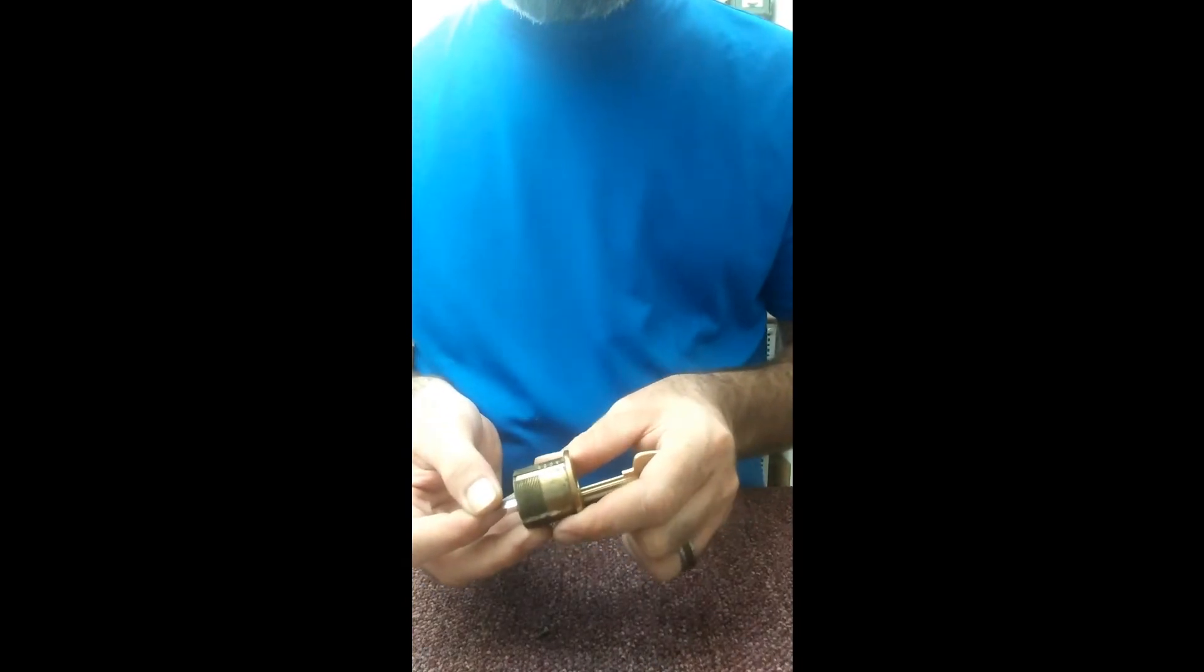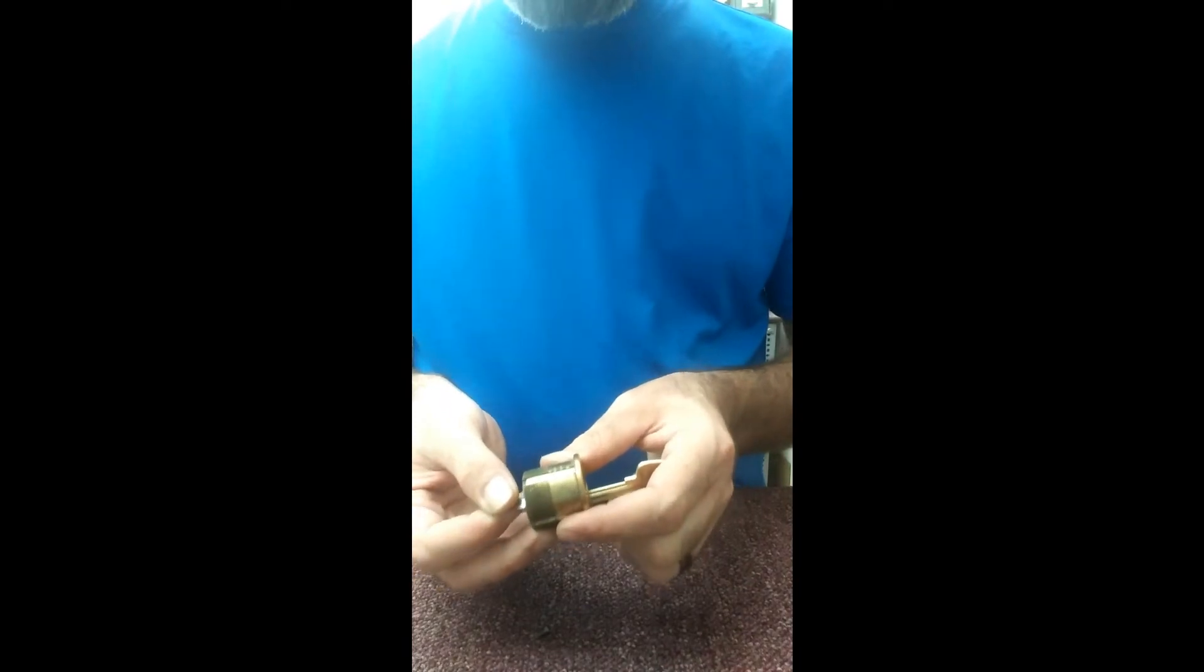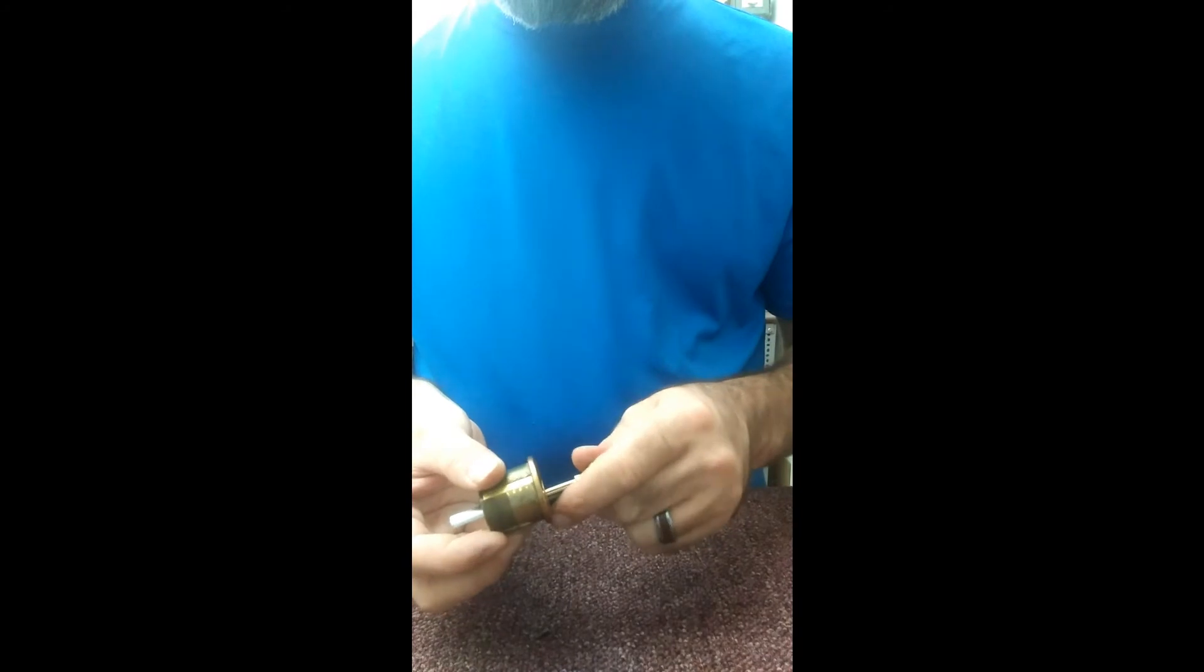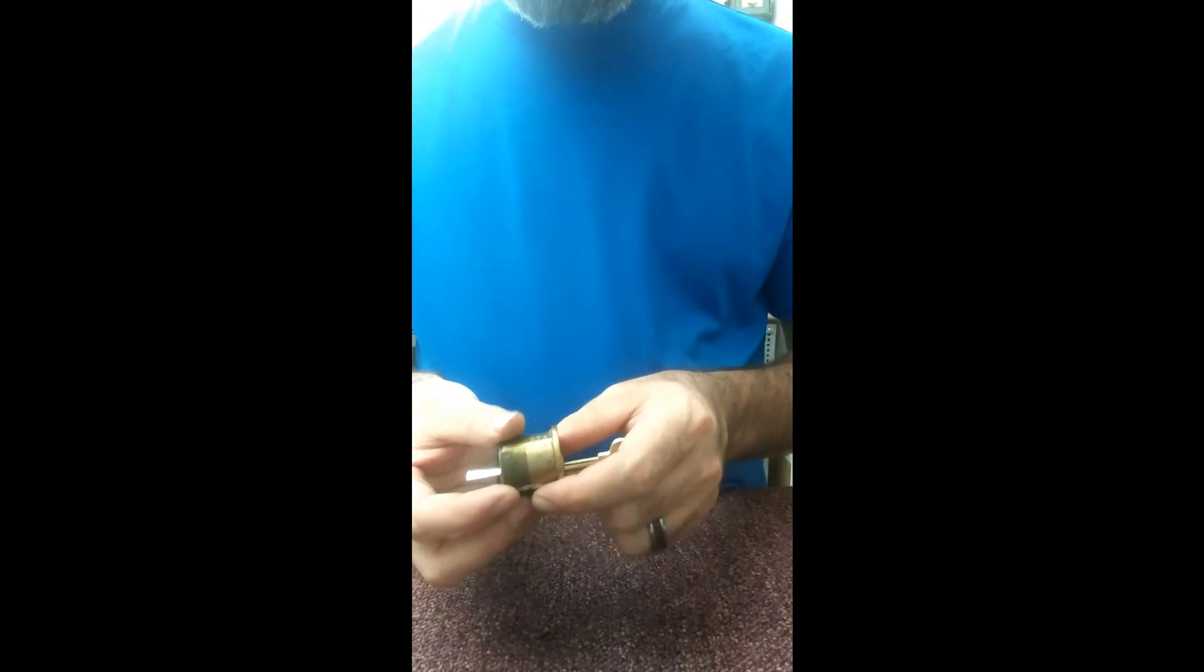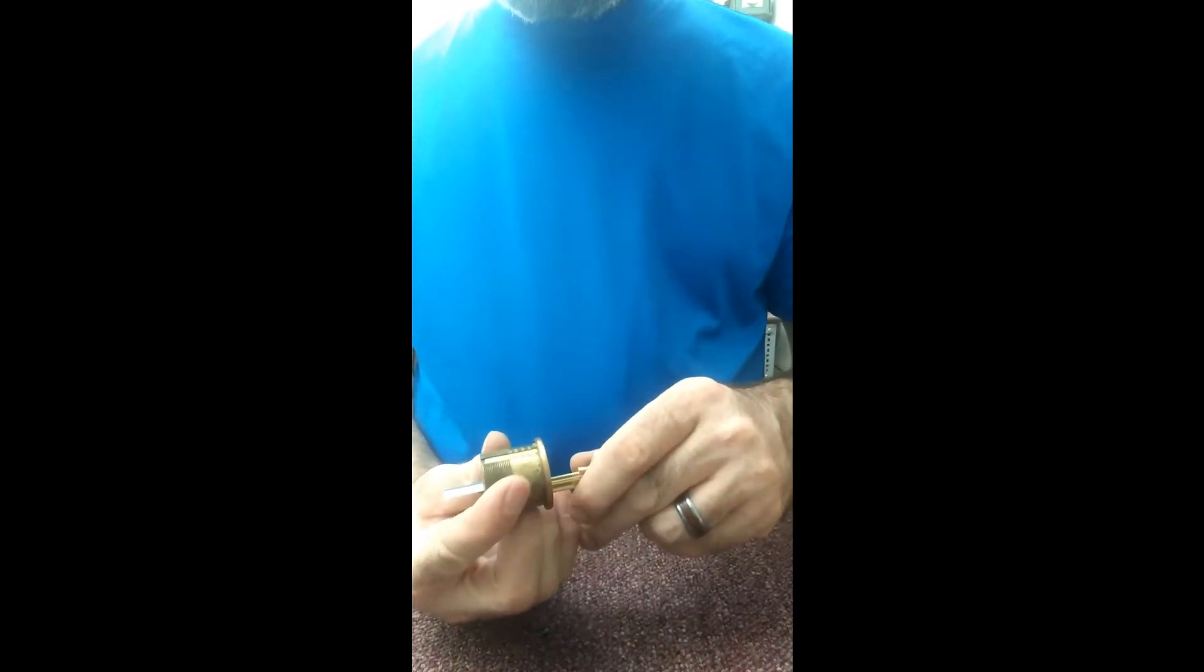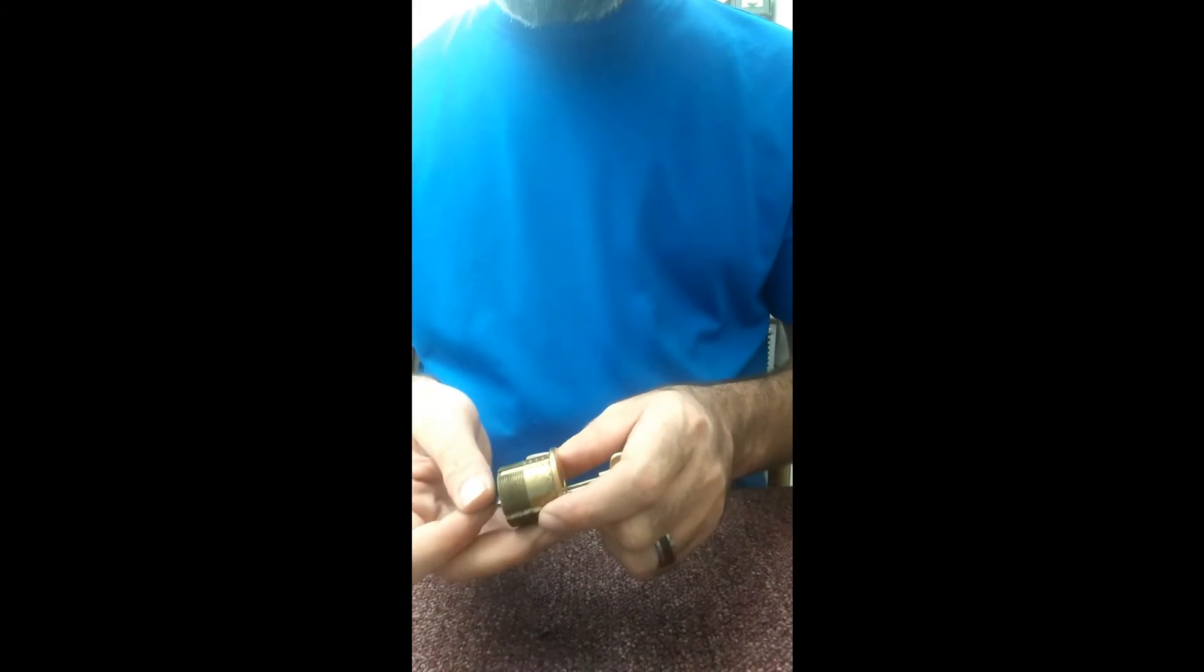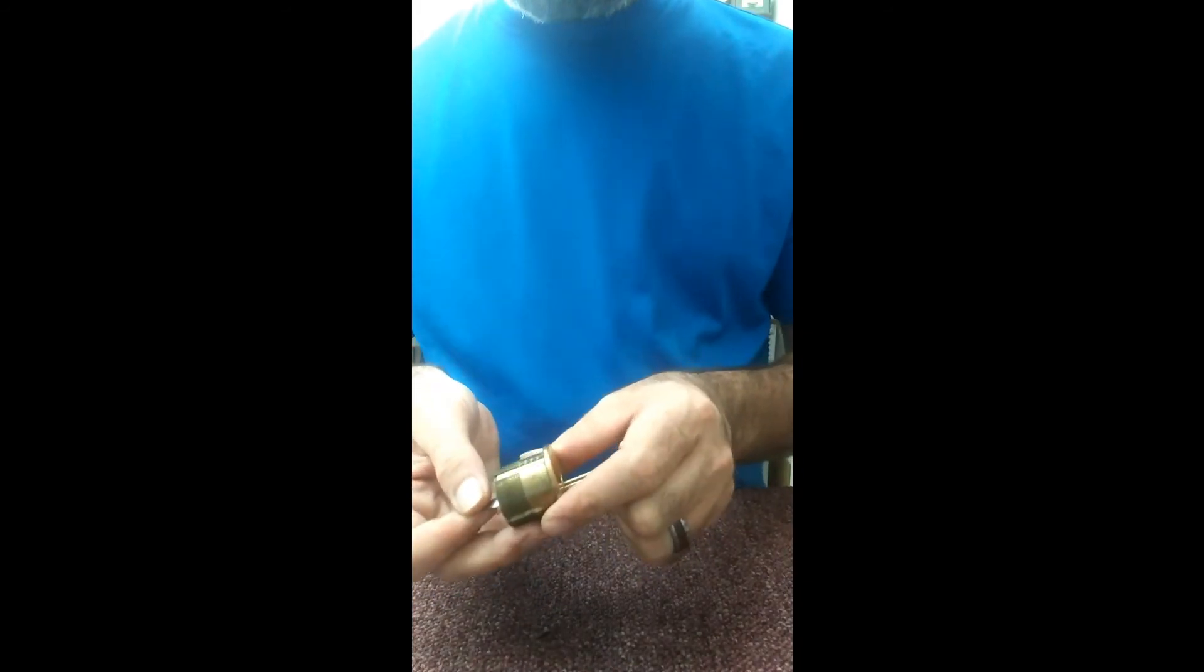Nope, there we go, we've got some movement. Another thing, if I had a vice right here holding it, another cool thing to do is kind of twist this back and forth while you slowly pull the key out. That helps free up the pins in case the pins are greased up, there's a lot of oil in there, something to that extent.